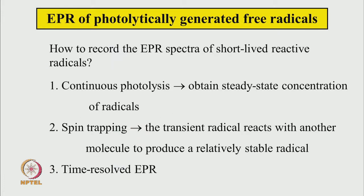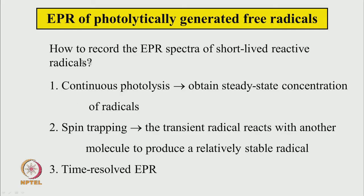Because these are very short-lived reactive radicals, how does one really detect and capture them? We have to find some special way of doing the experiment. The three ways are shown in the slide. One is continuous photolysis — let the reaction carry on all the time with light on in the sample, and we can hope to get some steady-state concentration of the radical that can be seen in a steady-state EPR spectrometer.